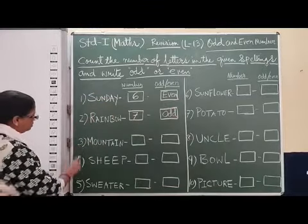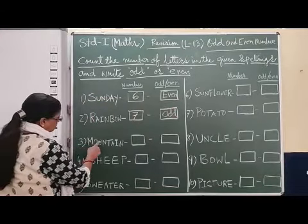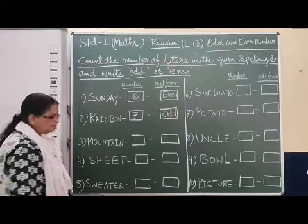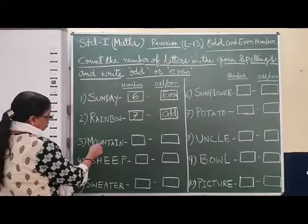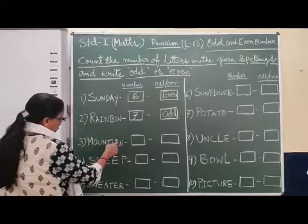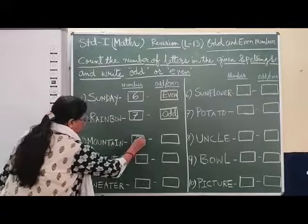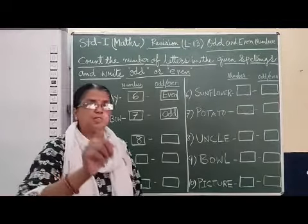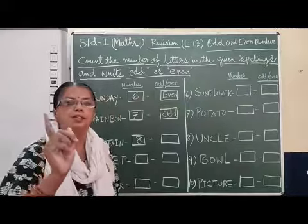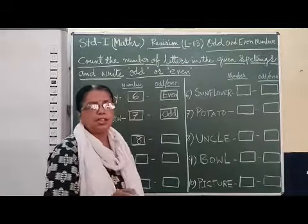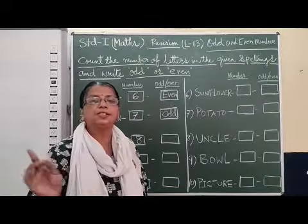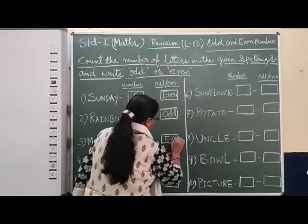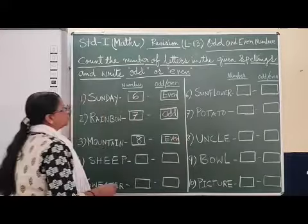Next one: M, O, U, N, T, A, I, N — Mountain. 1, 2, 3, 4, 5, 6, 7, 8. There are 8 letters. So 8 is an even number because numbers ending with 0, 2, 4, 6, 8 are even numbers. So this is an even number.